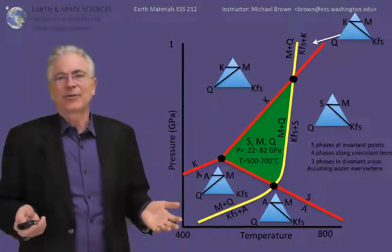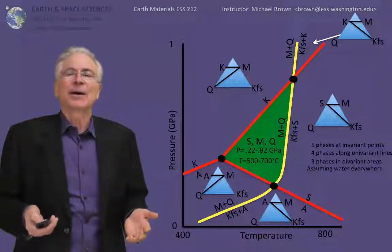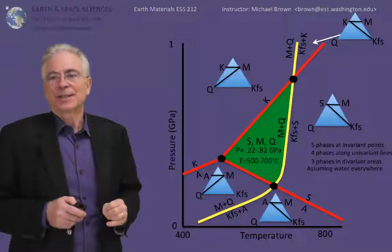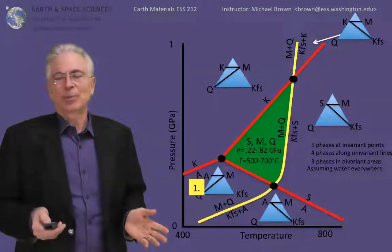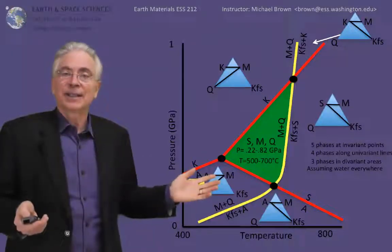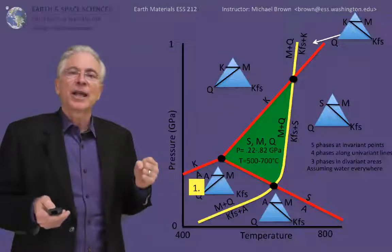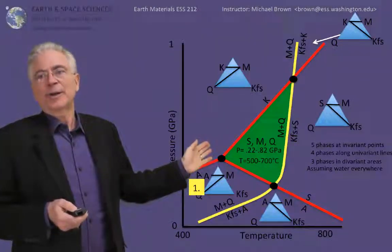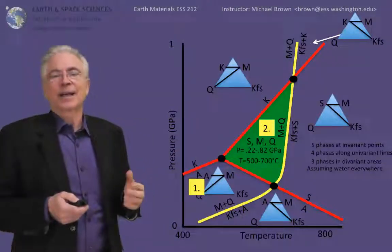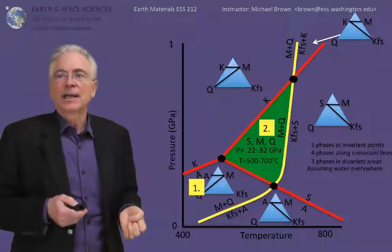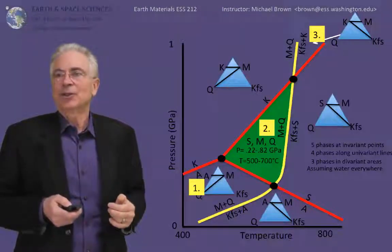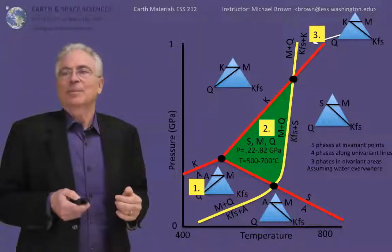You could imagine we've only considered four components. We could add additional components with additional phase boundaries crossing through this PT space and further narrowing down where individual phases would be present. But let's assume we had just this simple system with these four components. And we have a set of rocks that we've collected in a field area. We've walked across the surface of the earth and collected a rock in location one, and it had andalusite, muscovite, and quartz. We walked over to another outcrop and collected a rock containing sillimanite, muscovite, and quartz. And we went to yet another location several kilometers away in which kyanite was found in the rock in addition to the muscovite and potassium feldspar.